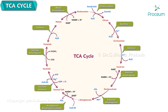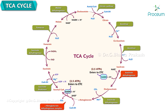Energetics of the citric acid cycle. Isocitrate dehydrogenase produces 1 NADH entering the ETC, generating 2.5 ATPs. Alpha-ketoglutarate dehydrogenase produces 1 NADH entering the ETC, generating 2.5 ATPs. Succinate thiokinase via substrate level phosphorylation generates 1 ATP. Succinate dehydrogenase produces 1 FADH2 entering the ETC, generating 1.5 ATPs.